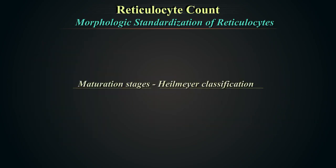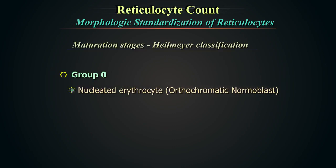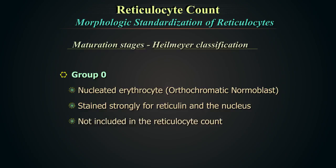Maturation stages of reticulocytes according to Heilmeier's classification are divided into various groups. Group 0 represents the nucleated erythrocyte or orthochromatic normoblast, which stains strongly for reticulin and the nucleus. This cell type is not included in the reticulocyte count.